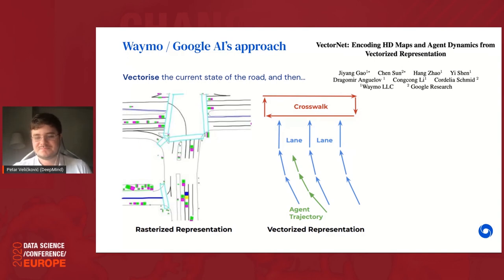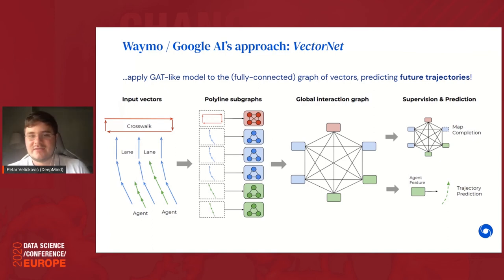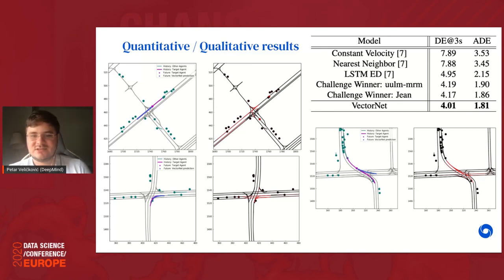In VectorNet, each lane, agent, or crosswalk is represented as a fully connected subgraph, and these subgraphs are further connected in a global interaction graph. A graph attention network style model then predicts where all agents will move in the future. Quantitatively, this approach outperforms several previously existing state-of-the-art baselines for multi-agent routing. While not yet physically deployed in real self-driving vehicles, it is a very promising approach to using graph structure to infer how all nearby agents are moving.